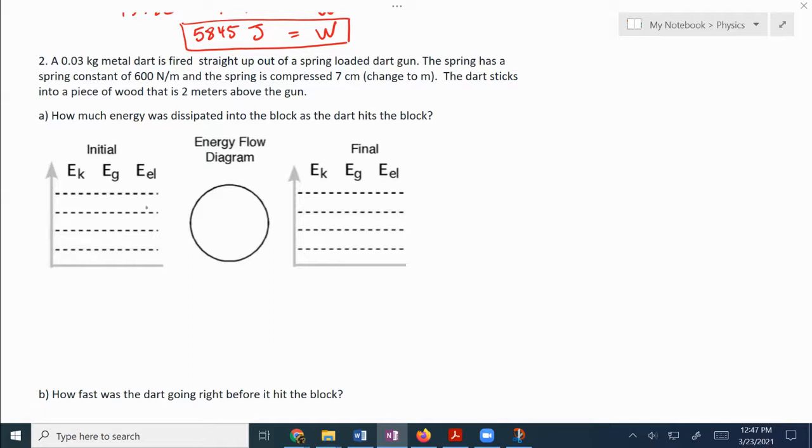Initially, so we're going to have the dart gun in the system and the dart in the system. Initially we're going to start things off with some elastic energy here from the dart gun, right? Dart gun and dart are not moving. Dart and dart gun are not up high, so neither of those two. At the end we have, at the end we have gravitational energy, or sorry, we don't have kinetic energy because it's not moving, it's stuck in the block, right? We do have gravitational energy because it's up high. No elastic energy because the spring is not compressed. So the question is, where did some of that energy go, right?